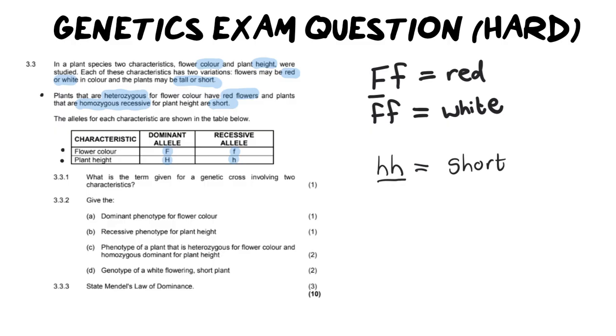That is the only way the recessive trait can be shown in the phenotype is if both the alleles are recessive. If, however, we had a capital H, it would then mean that we had a tall plant. Or if we had a homozygous dominant plant, then we would also have a tall plant as well. Remember, it is based off of the laws of dominance. That's what's governing all of this here.